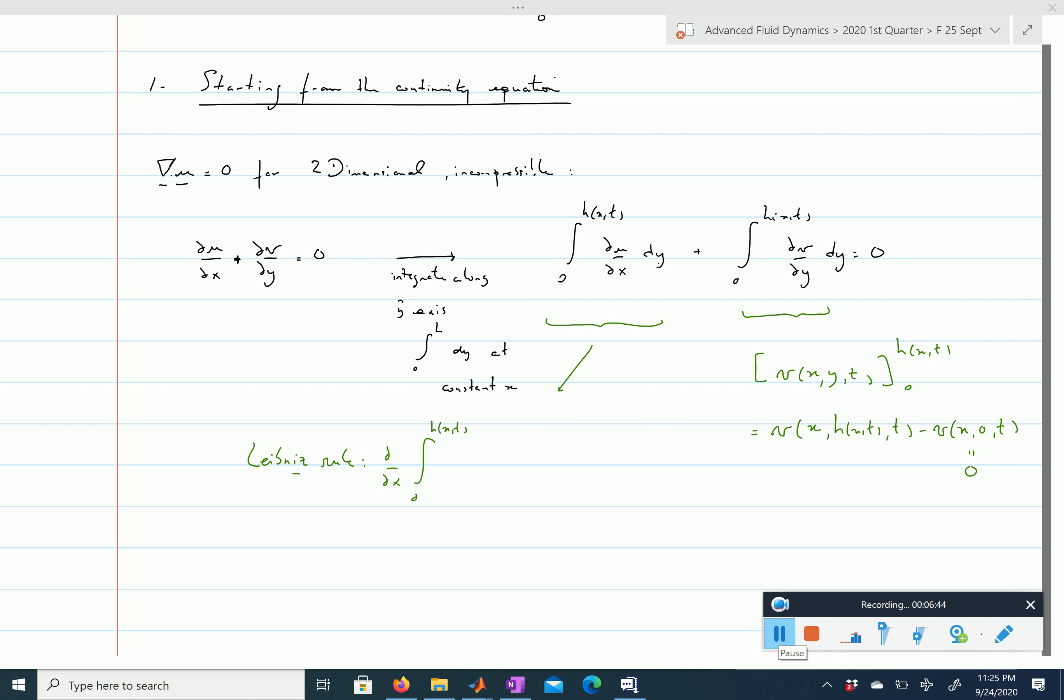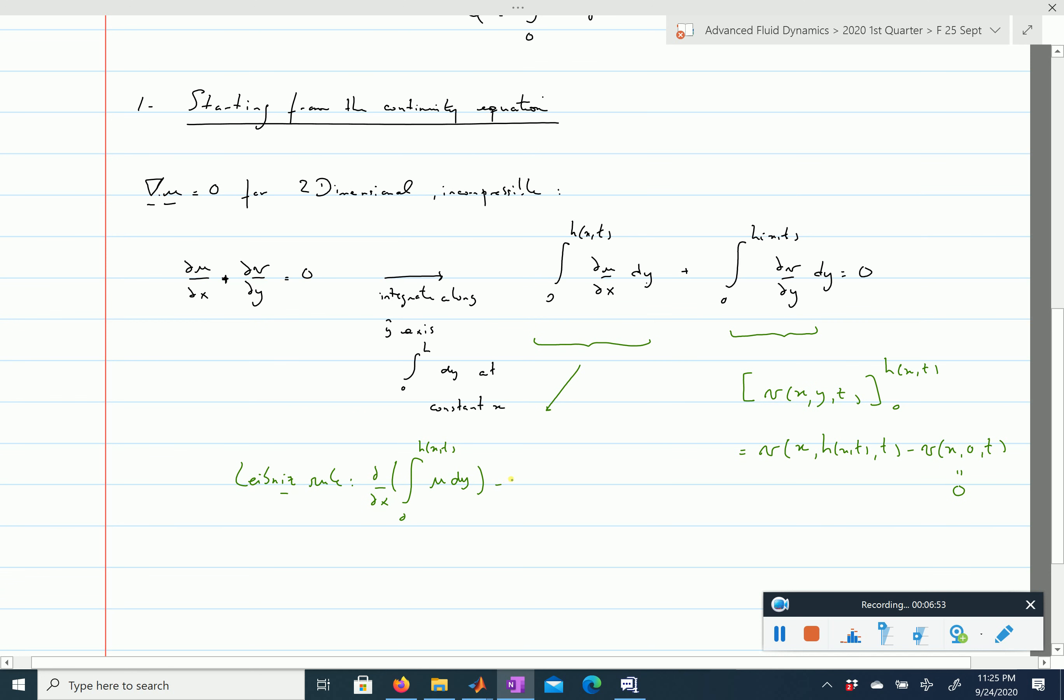It equals ∂/∂x of the integral from 0 to h of u dy, minus the velocity u at (x, y=h(x,t), t) times ∂h/∂x. This is just a mathematical formula similar to integration by parts—there's no physics in it. You recognize that here we have the volumetric flow rate q(x,t).